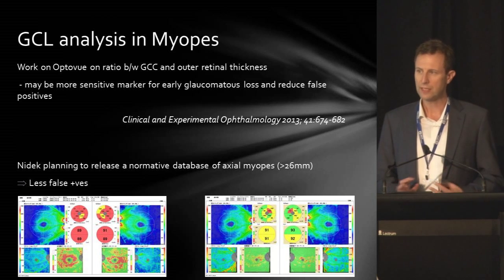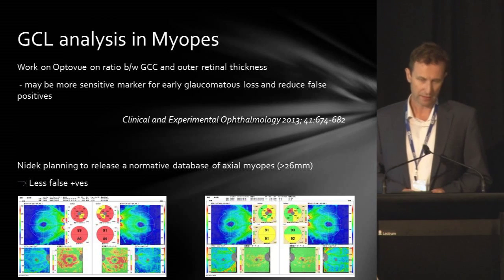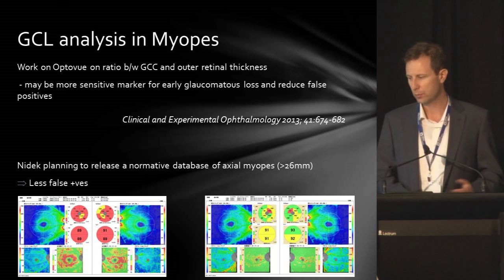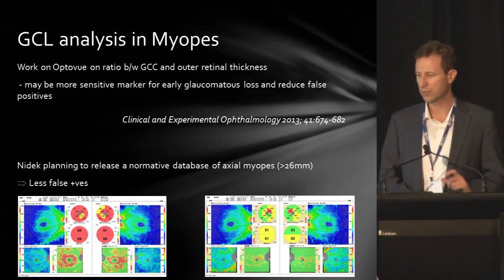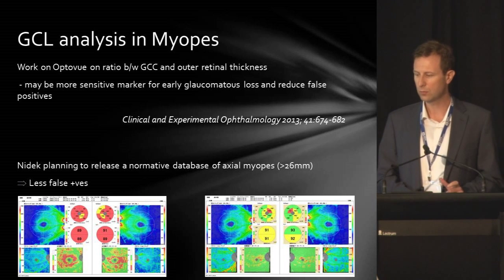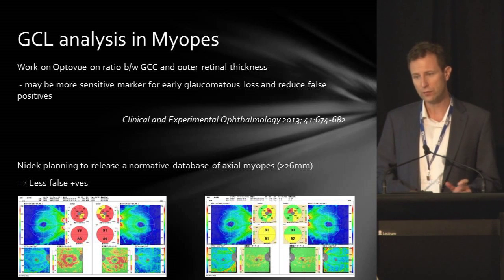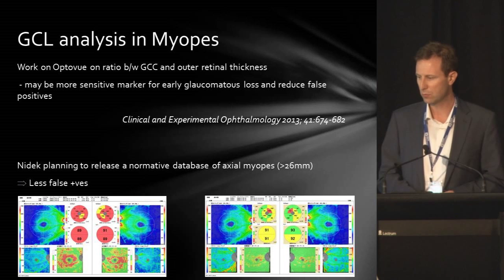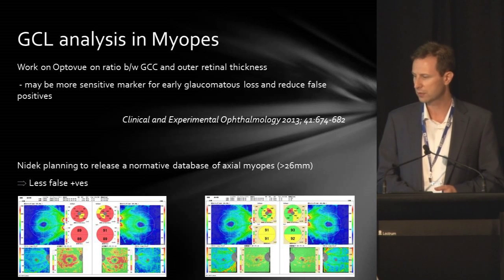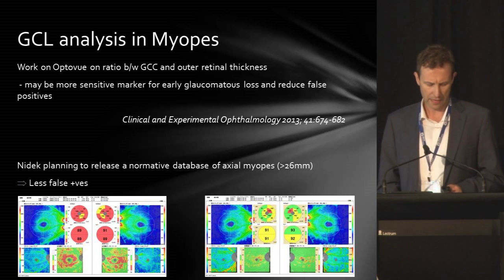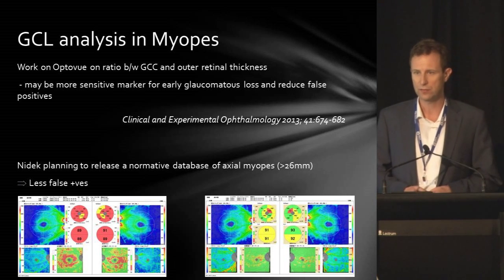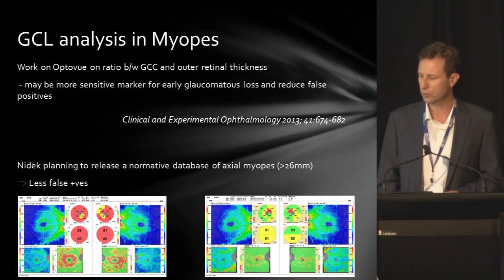The limitation of ganglion cell analysis in myopes is being looked at, and work has been reported in our own journal about looking at the ratio between the ganglion cell complex on the OptiVue and the overall retinal thickness, to control for this. It suggests this may be a more sensitive marker for early glaucomatous loss and reduce false positives. NIDEC are also working on a different normative database for myopes to try and eliminate the false positives.